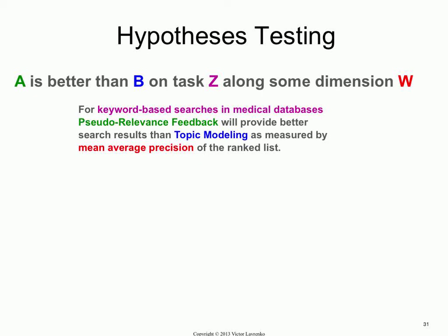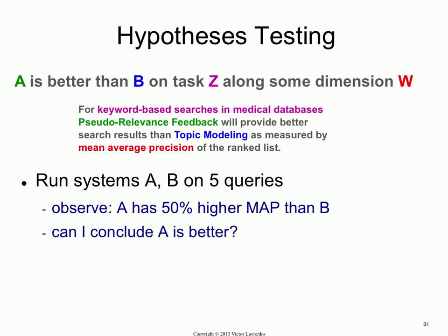Ultimately, the reason you need a hypothesis is because at the end of the day, you want to make a qualitative judgment. You want to say A is better than B. It's not a number that matters — it's the conclusion you're driving, where A is some system that you've built. So suppose you do something like that: you built your system A, you have a baseline system B, you've run them on five queries, and you see that A has a 50% higher mean average precision.